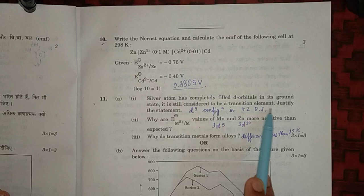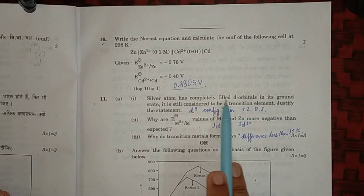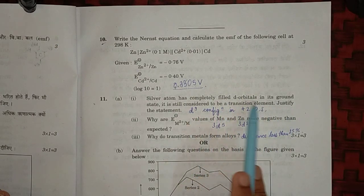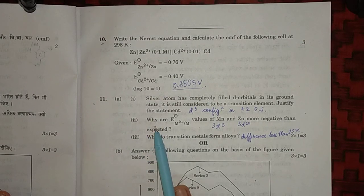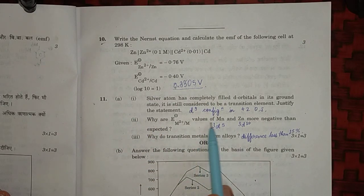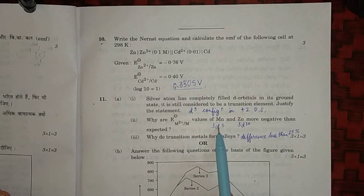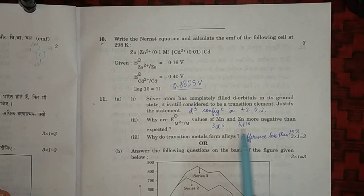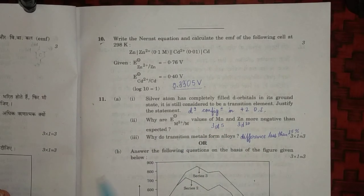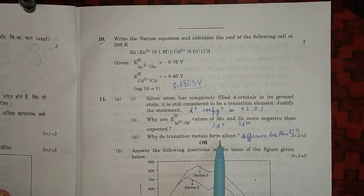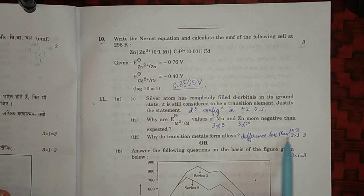Why are E(M2+/M) values of Mn and zinc more negative? Because they have half-filled and full-filled orbitals which are more stable. Why do transition metals form alloys? Transition metals form alloys because difference between their sizes is less than 15%.